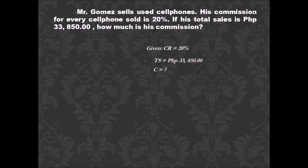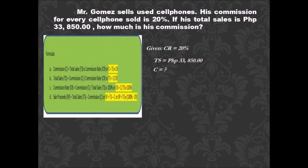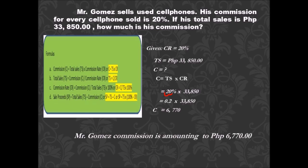What is asked is the commission. From our formula, commission is equal to total sales multiplied by the commission rate. So: 20 percent times 33,850. We cannot multiply 20 percent directly, so we change it into decimal by moving two decimal places to the left. That is 0.20 times 33,850. The result is commission is equal to 6,770.